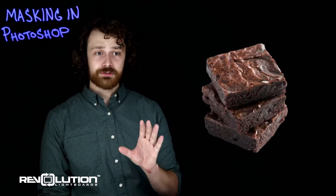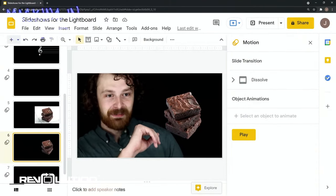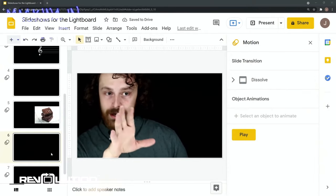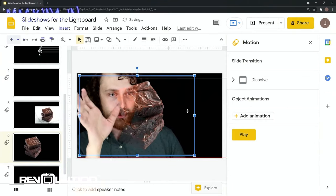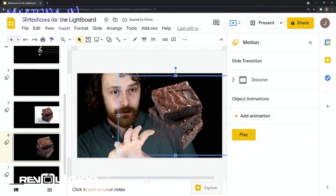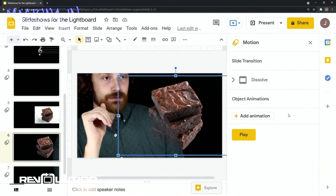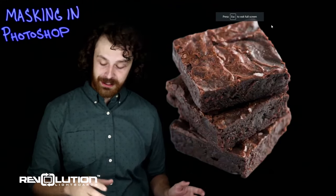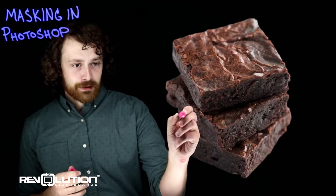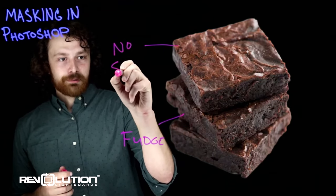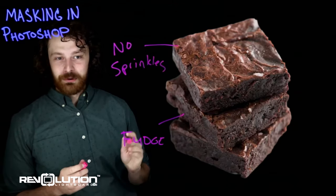Now inside your slideshow presentation — I'll show you what this looks like in Google Slides. I've gone to the folder on my system where this is saved and dragged the brownie right onto my workspace. I can reposition it, do whatever I want. Because we have a transparent background from Photoshop, it will be transparent on our black background in Google Slides. If I go to Present, it looks like I've got a floating brownie — and I can go ahead and annotate it, pointing out the fudge content or noting that there are no sprinkles on this brownie.